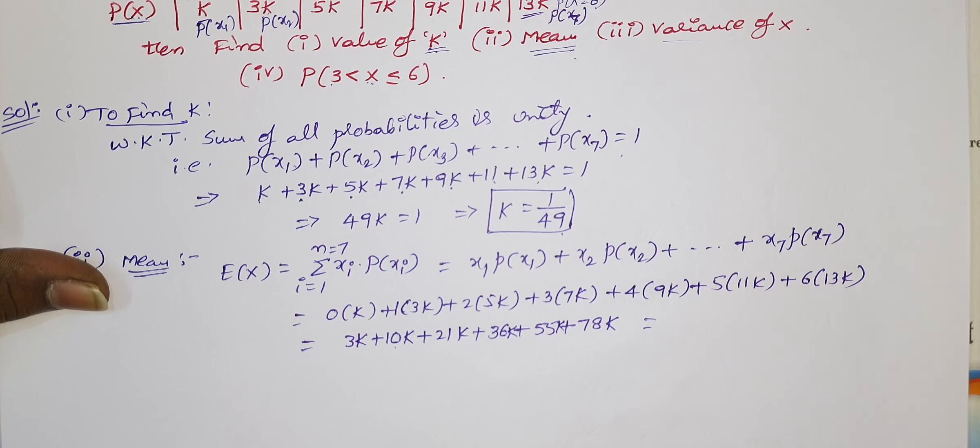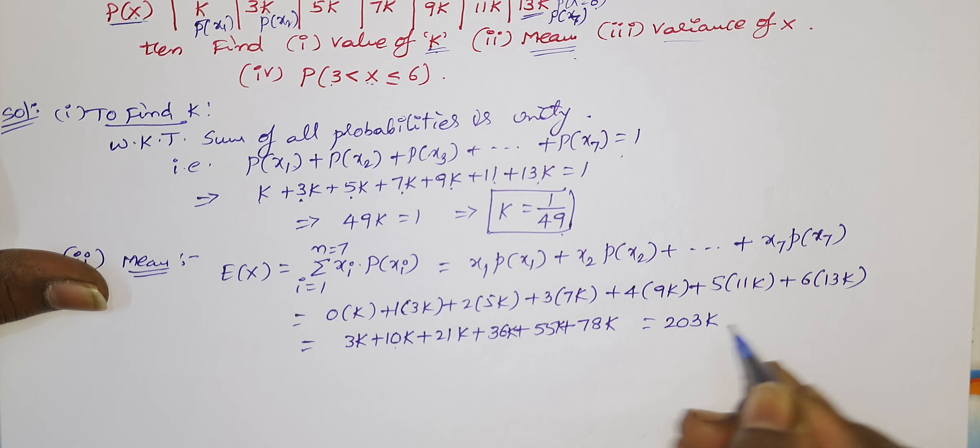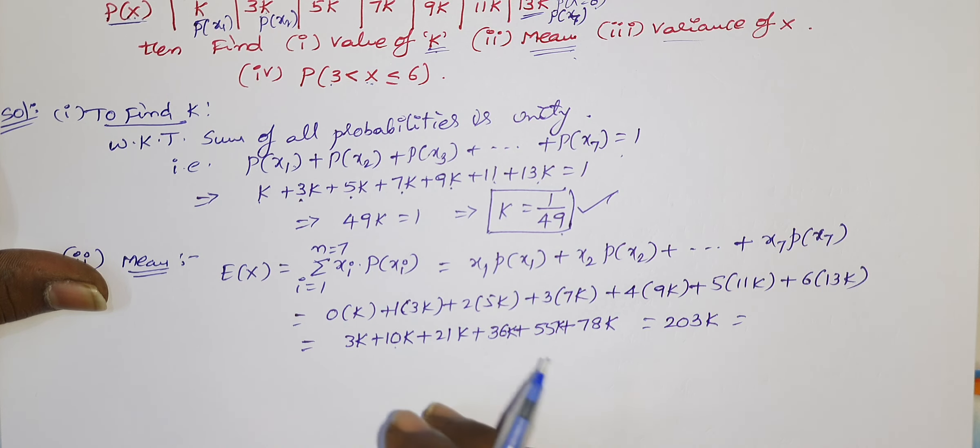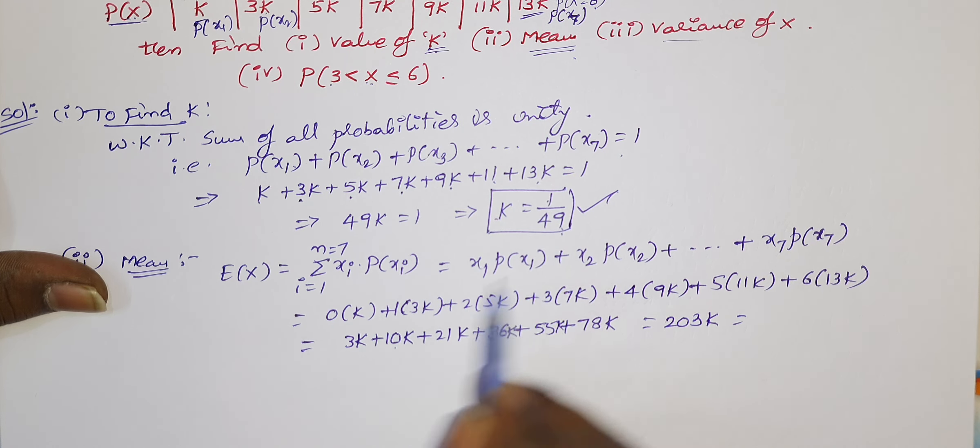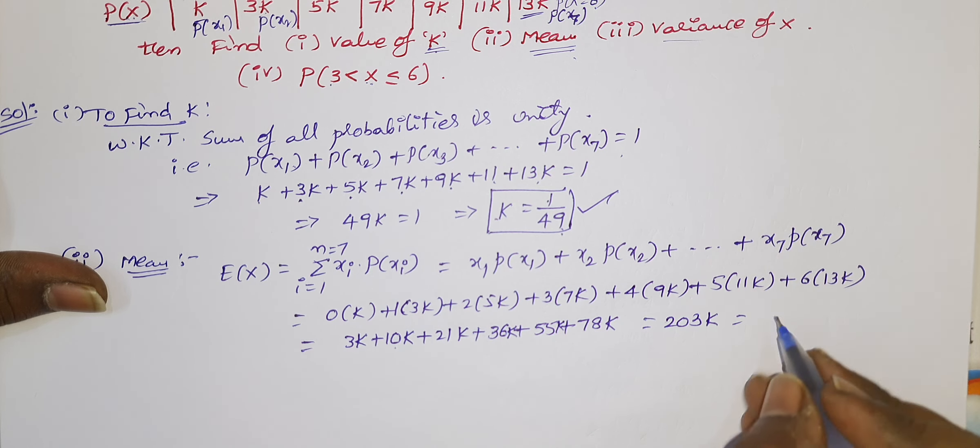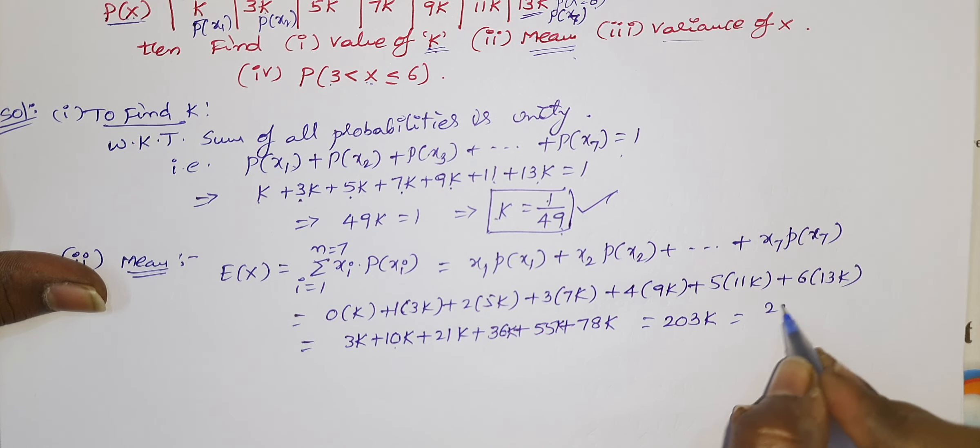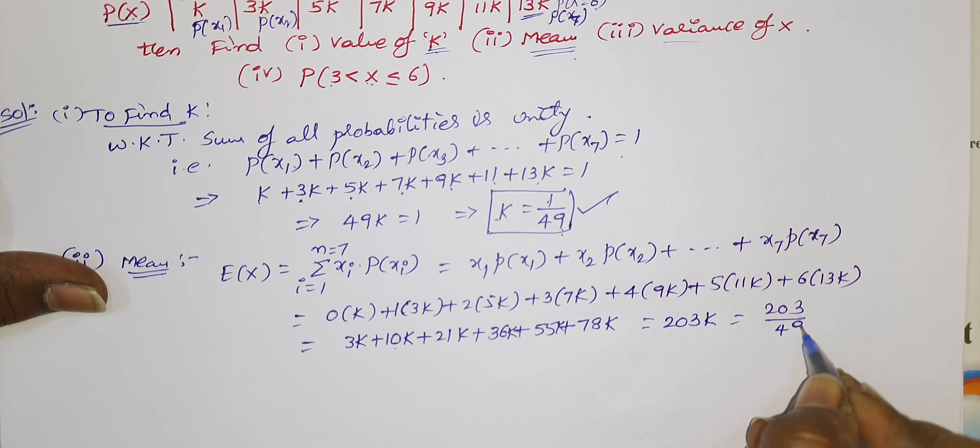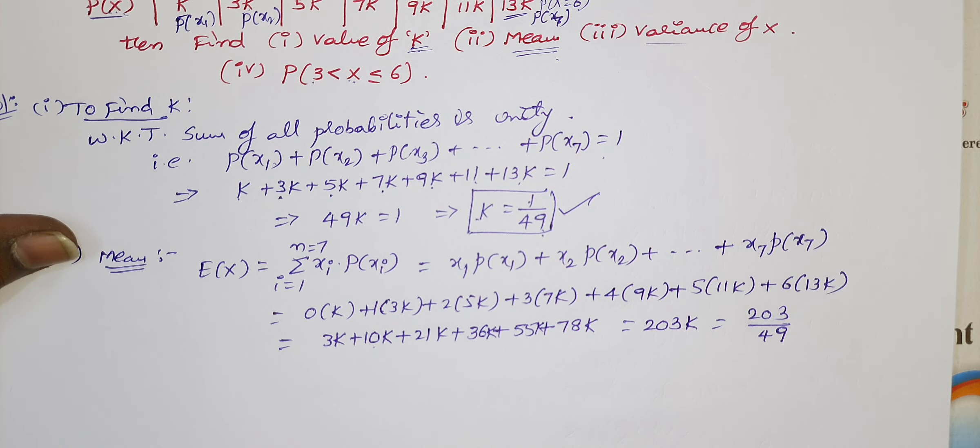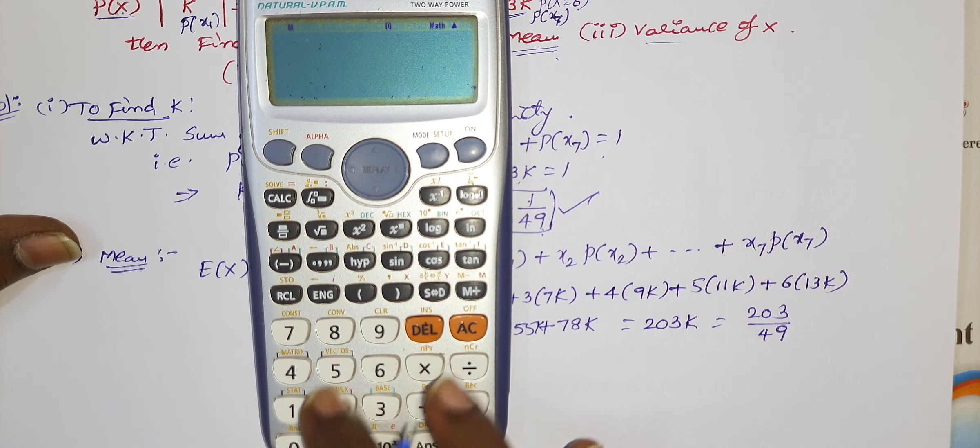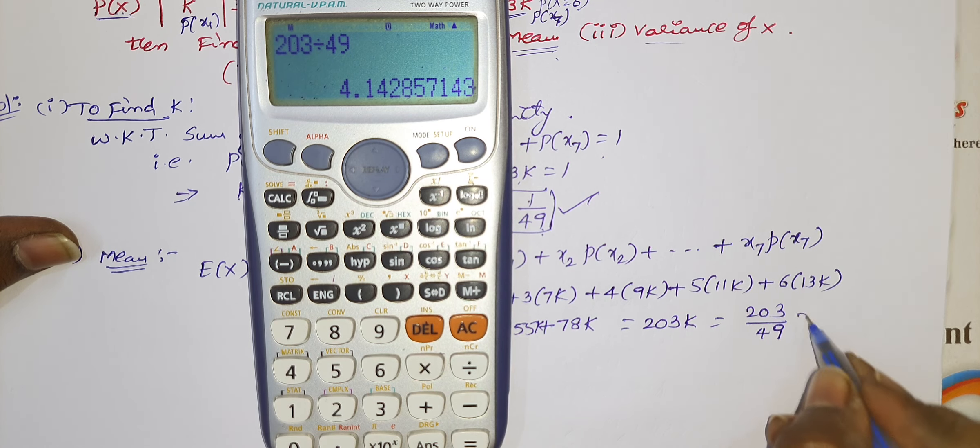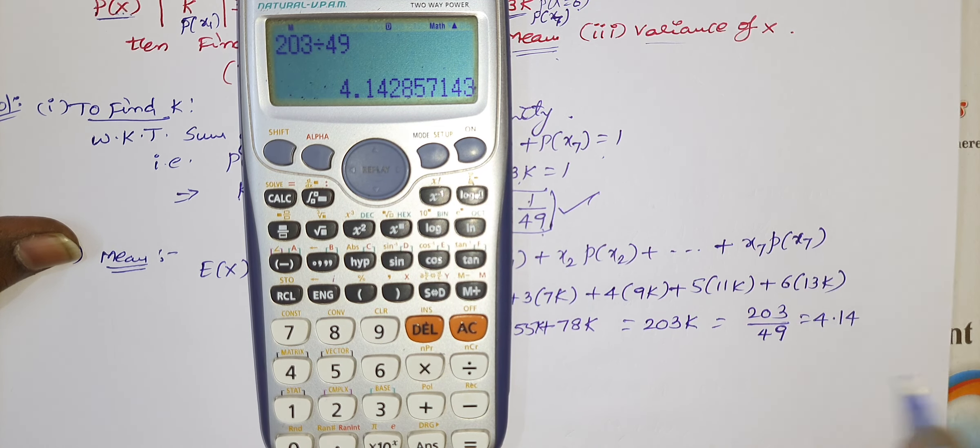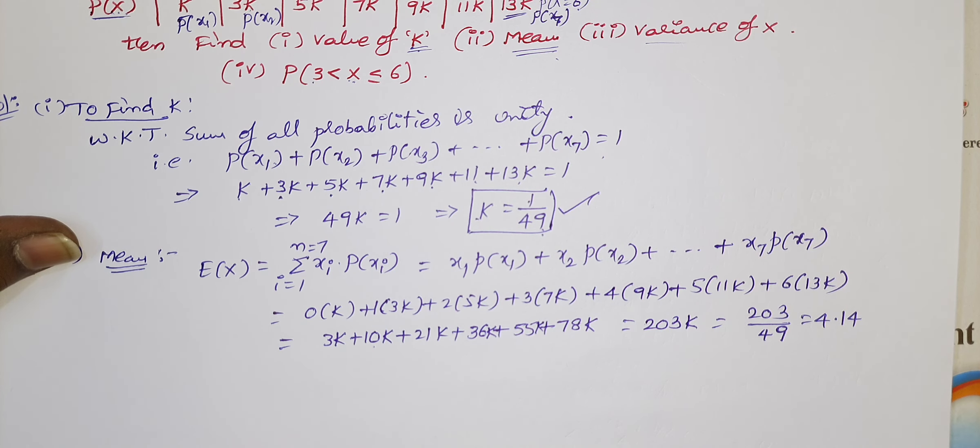You can add these all things. So 3 plus 10 is 13, plus 21, it is 36, plus 55, plus 78. I got 203k. What is k value? We got k value is 1 by 49. Don't replace k equals 1 by 49 at the starting. You can replace k value at the climax. 203 by 49. This is the expectation. You can also write in decimal place. So it would be 4.14. Two decimal places are enough.